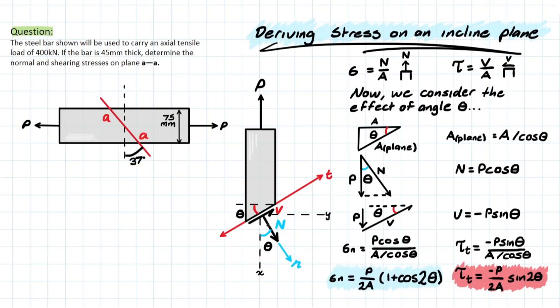So I've tried to label this diagram so that it's easy to follow how these equations are derived. We have this red line to represent the theta we're looking at here. So in this case it would be the 37. But just for deriving's sake, we need to consider a new area that the stress is going to be distributed over.